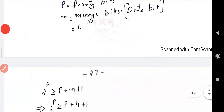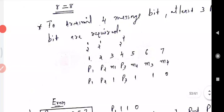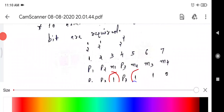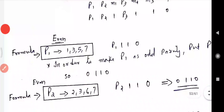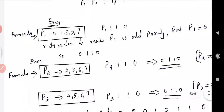In this problem we have to find out the values of P1, P2, and P4. The positions are 1, 2, 3, 4, 5, 6, 7. The message bit is 1, 1, 1, 0. To find the parity values, you have to understand three formulas: for P1, it covers positions 1, 3, 5, and 7; for P2, it covers positions 2, 3, 6, and 7; and for P4, it covers positions 4, 5, 6, and 7.